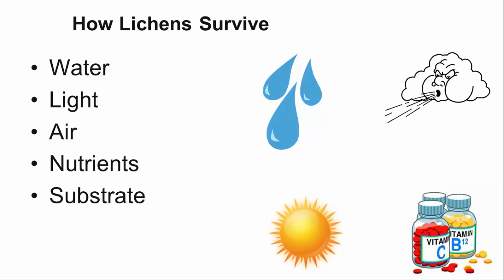Lichens need clean, fresh air to survive. They have to absorb the air from their environment, which includes the nutrients they need to survive, as well as any harmful toxins that may be in the air. Lichens absorb nitrogen, oxygen, and carbon from the air.